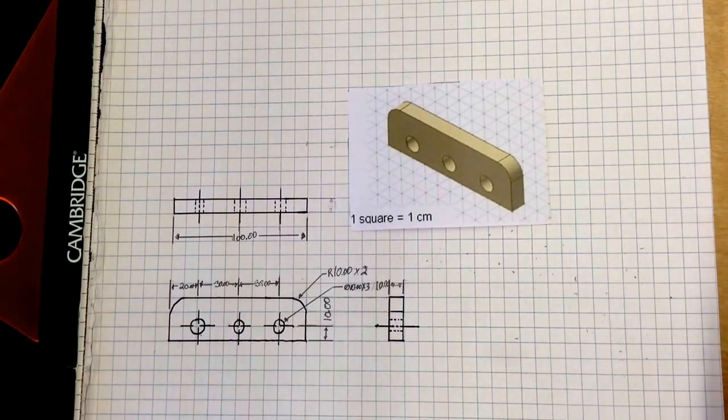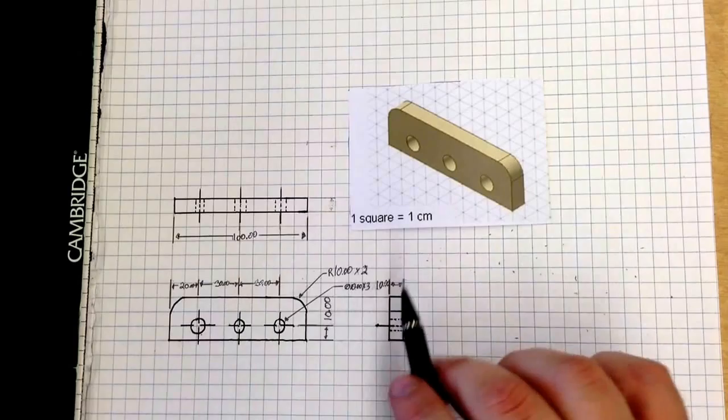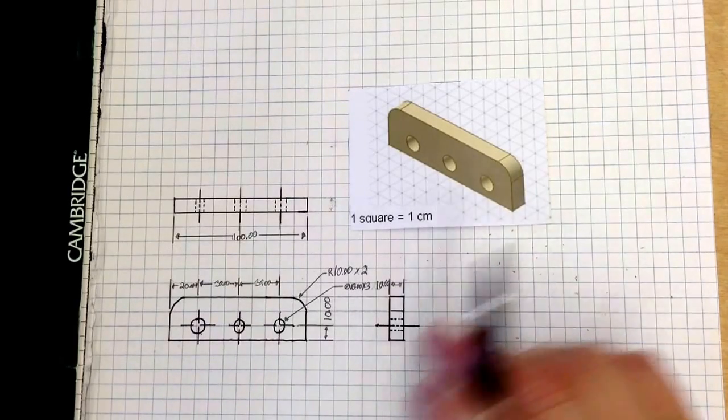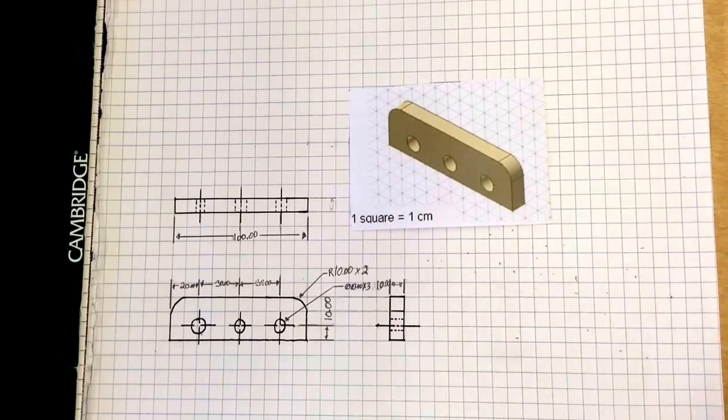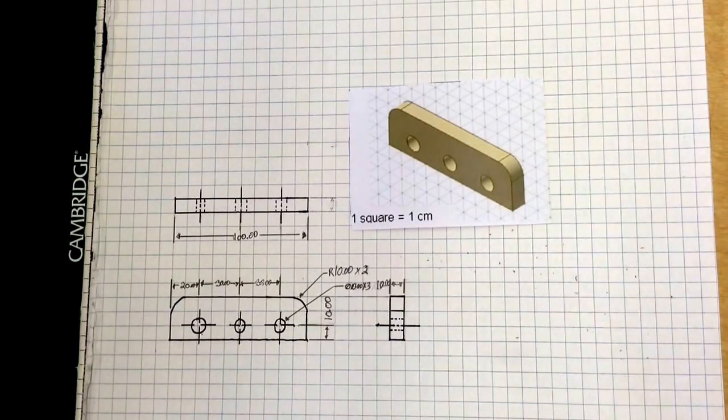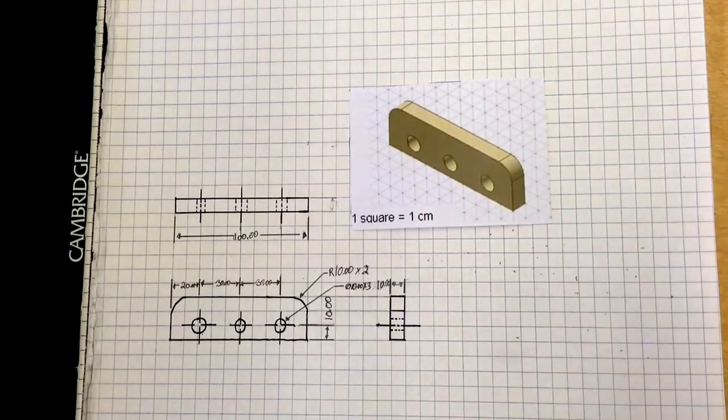So this is this dimension. All of our dimensions fall inside the object. It's not overly constrained or overly dimensioned. And we have it to scale. So one square equals one centimeter. So go ahead and stop this video, rewind, and replay as many times as you need to get the concept.